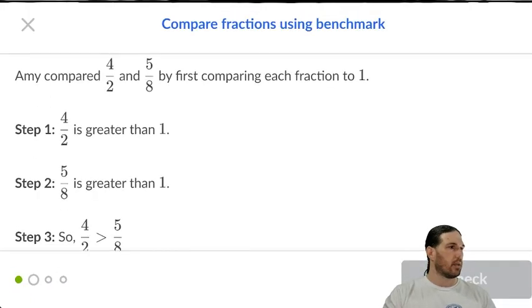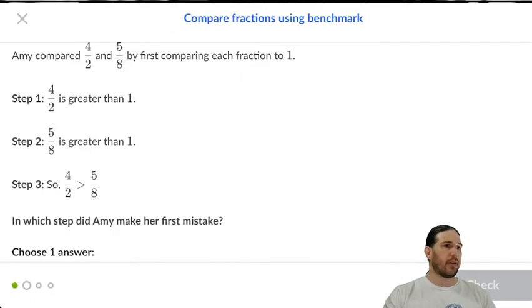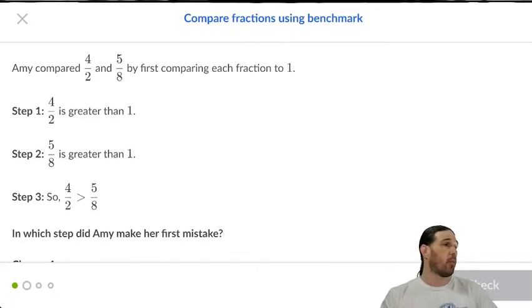Amy compared four over two to five over eight by comparing each fraction to one. Step one, four over two is greater than one. Step two, five over eight is greater than one. Step three, so four over two is greater than five over eight. In which step did Amy make her first mistake? Now, I like that it said first mistake, because I can count two mistakes in this problem. And remember that one of those common core practice standards that we focus so hard on is being able to critique the reasoning of others, being able to figure out what were they going for, and if they made a mistake, where is that mistake? This is essential to building good understanding of these topics. And this is a great example of it.